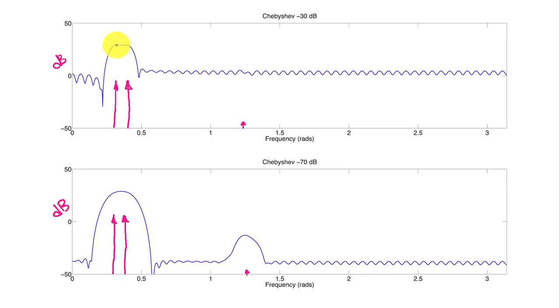That the narrower main lobe associated with the minus 30 dB side lobes in the Chebyshev window allows us to almost see that there's two terms in here. There's a little bit of a dip in there.